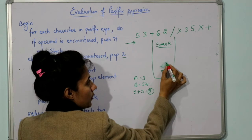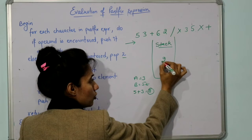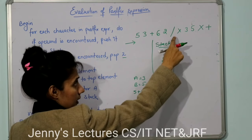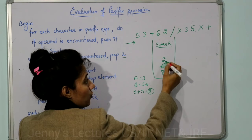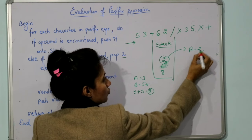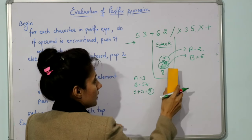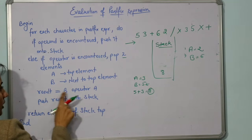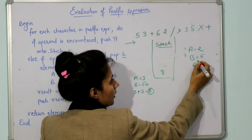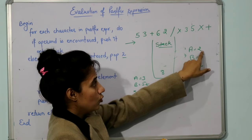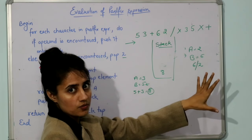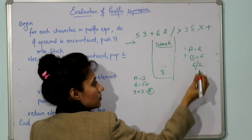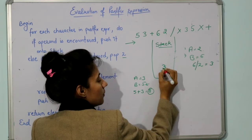Next is 6 — operand — push it. Next is 2 — operand — push it. Next is the division operator. Pop 2 elements: A = 2, B = 6. Result is B ÷ A = 6 ÷ 2 = 3. Note: you cannot write A ÷ B, because 2 ÷ 6 is a different thing from 6 ÷ 2. Push result 3 back onto the stack.